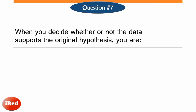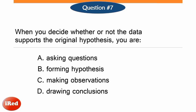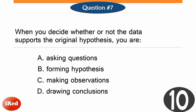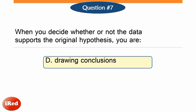Number 7. When you decide whether or not the data supports the original hypothesis, you are drawing conclusions. This is the part of the scientific method wherein the experimenter decides whether the results of the experiment support the hypothesis or not. The correct answer is letter D, drawing conclusions.